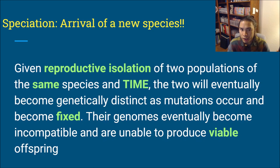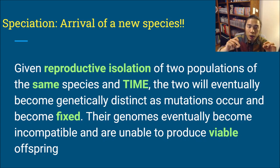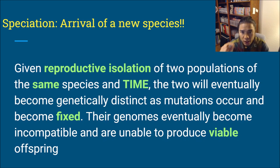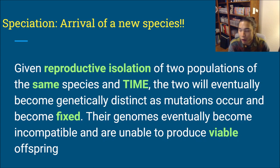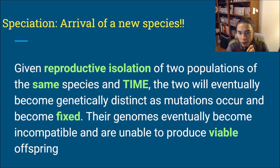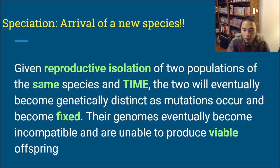Reproductive isolation means they're not reproducing with one another. At the very beginning it's just two populations of the same species that are separated, and speciation takes a lot of time. Those mutations need to accumulate and become significant enough that they can't breed, and they need to become fixed — meaning they spread throughout the population. Eventually that population could be considered a species that could not breed with the other one, unable to produce viable offspring. Viable offspring would be able to produce offspring themselves — fertility.